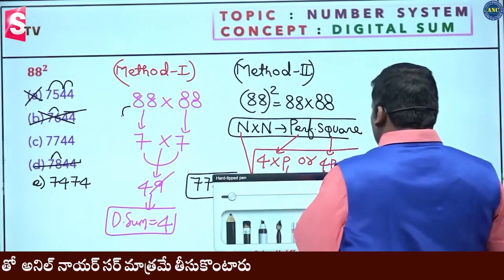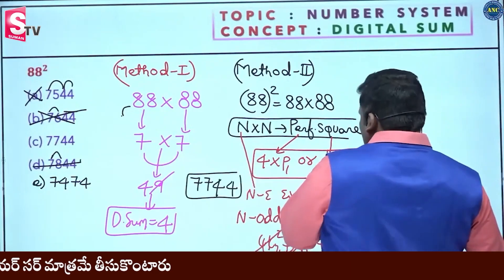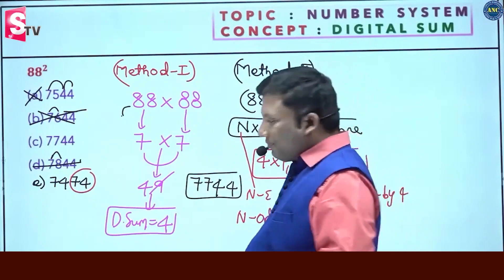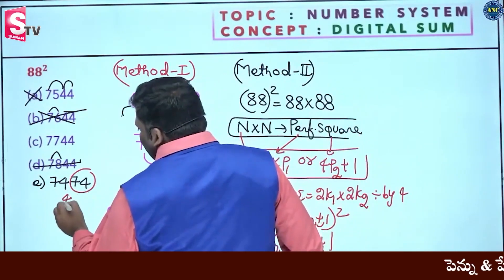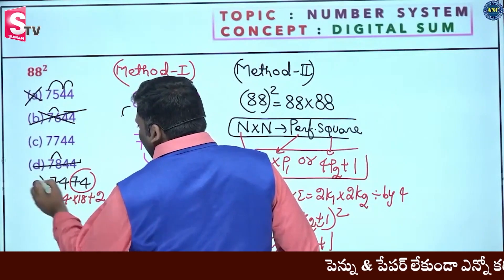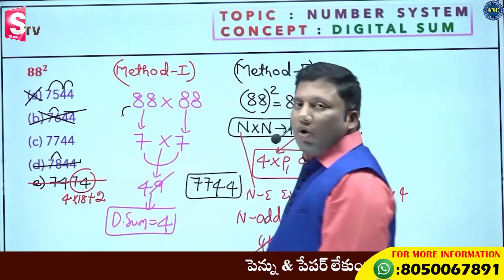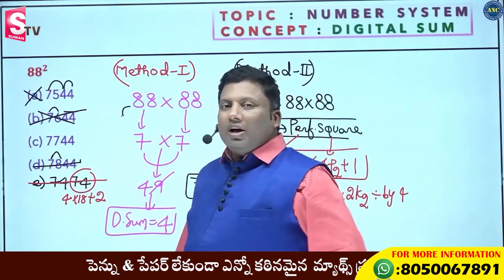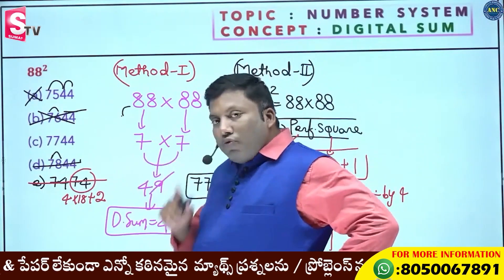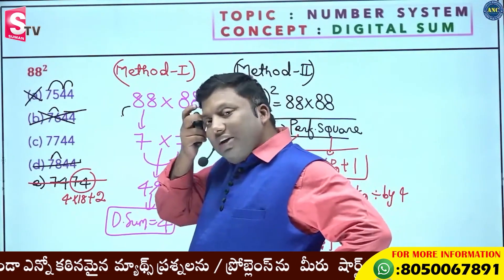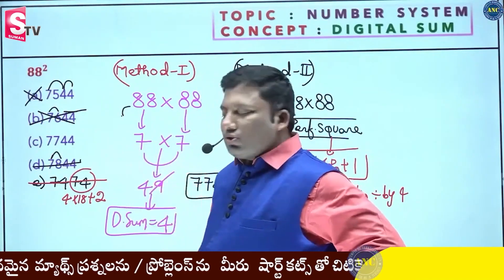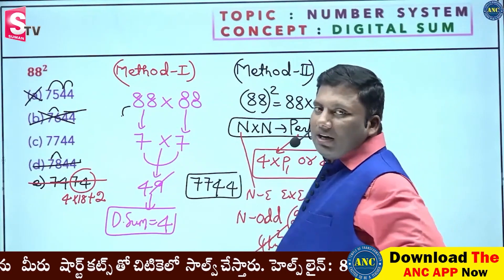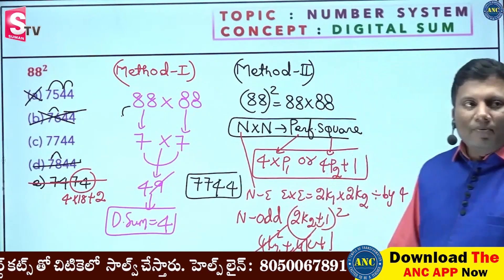Here, this option 7474 - apply the divisibility rule. 4k plus 2 form, or 4k plus 1 form, or 4k form. Option 7474 is of the form 4k plus 2, meaning it cannot be a perfect square.